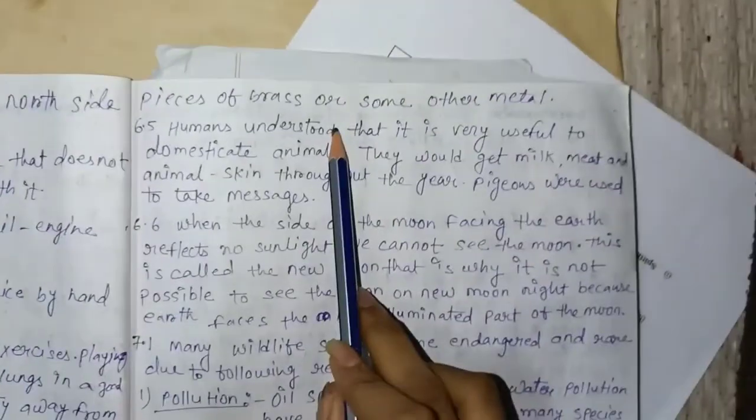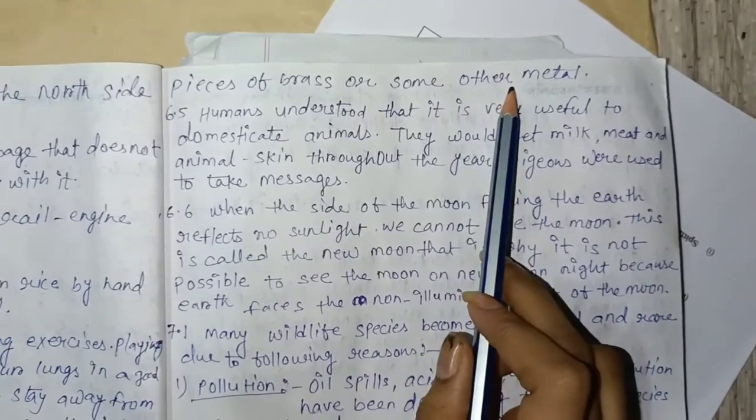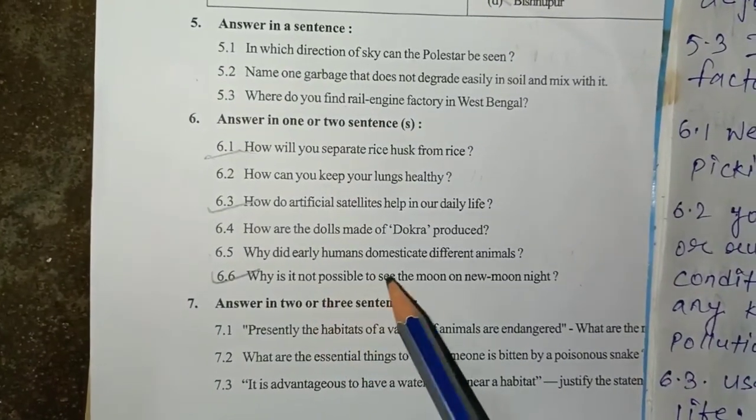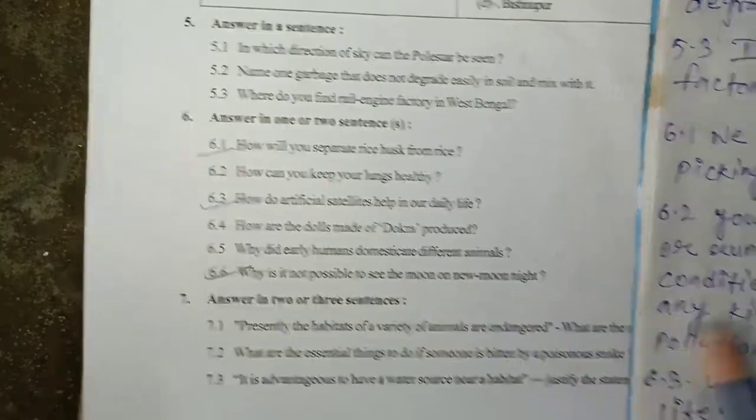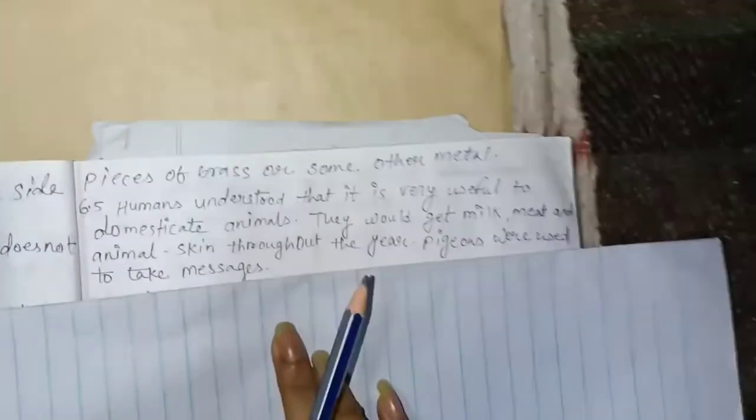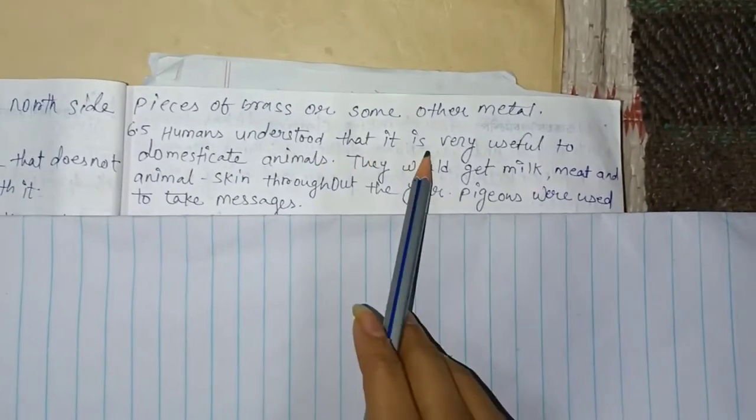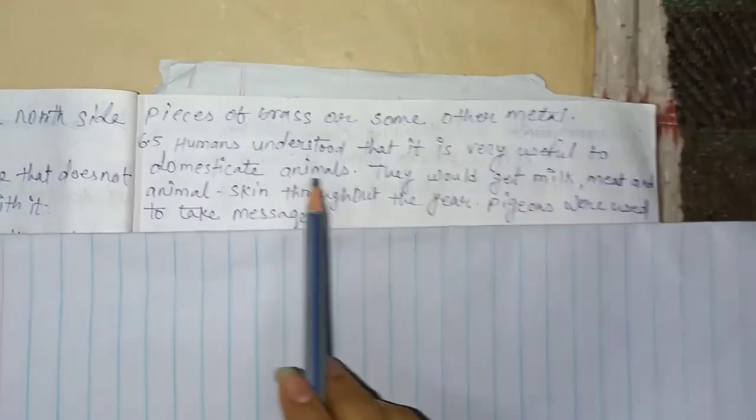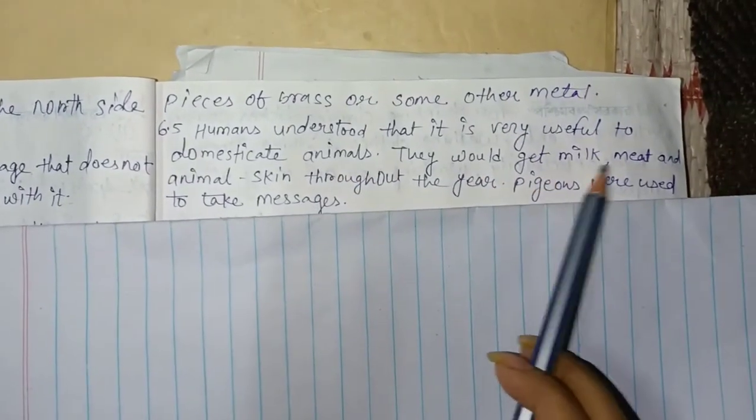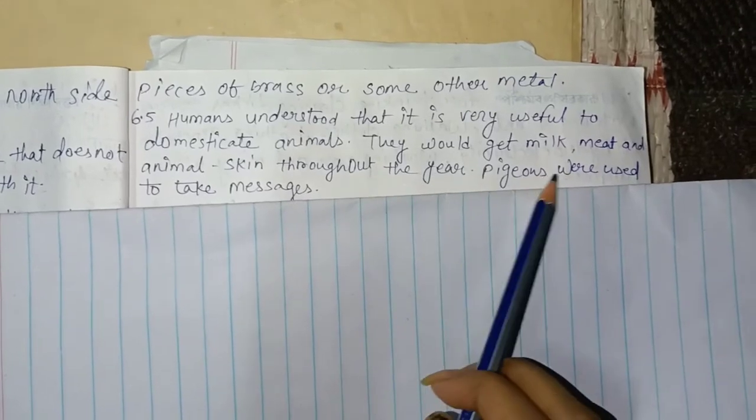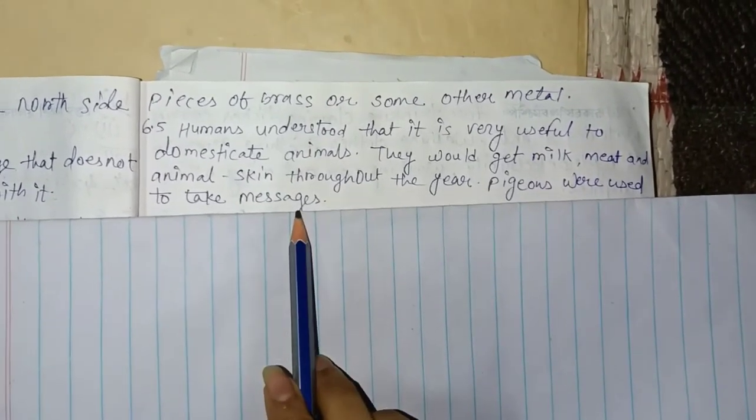5.5: Why did only humans domesticate different animals? Humans understood that it is very useful to domesticate animals. They would get milk, meat, and animal skin throughout the year. Pigeons were used to take messages.